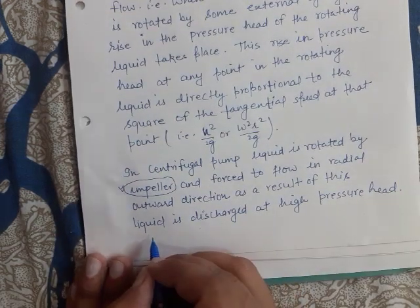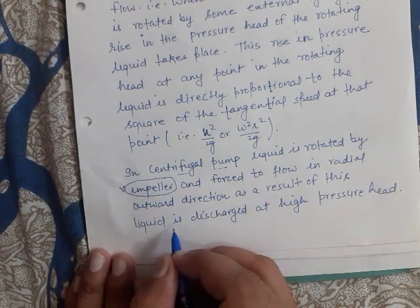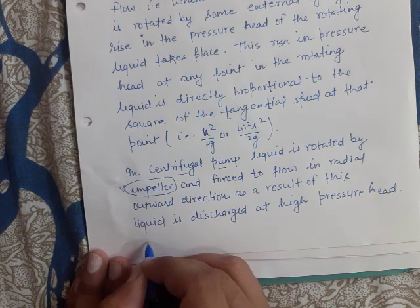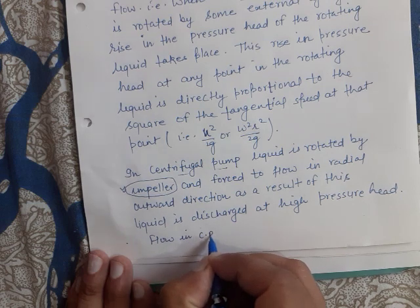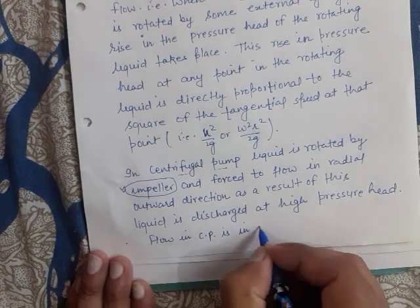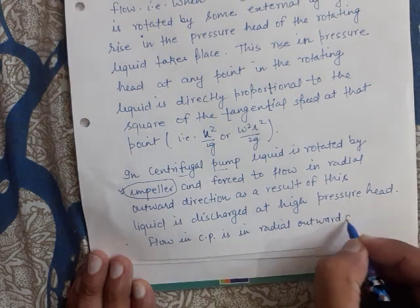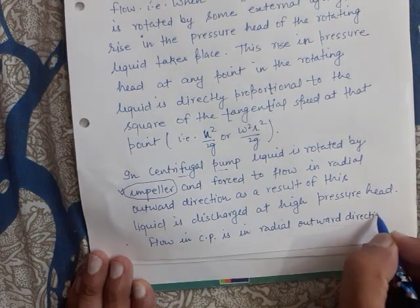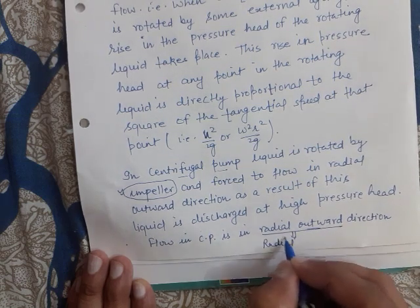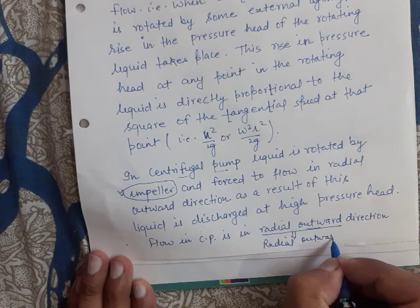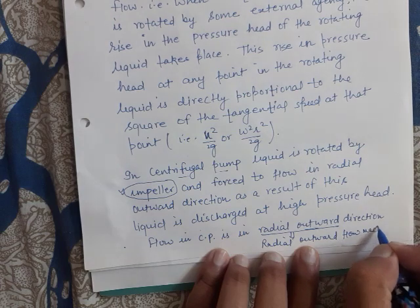In a centrifugal pump, the flow is in the radial outward direction — it is a radial outward flow machine, just the reverse of an inward flow reaction turbine.